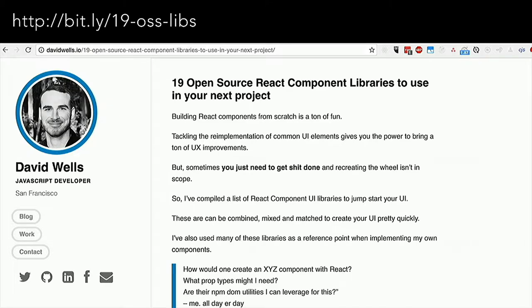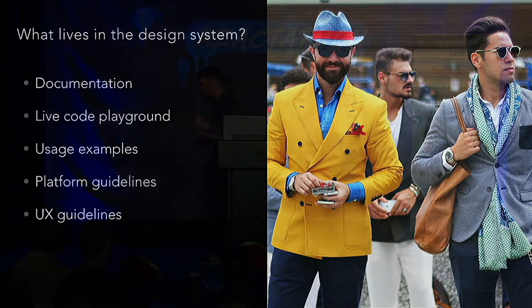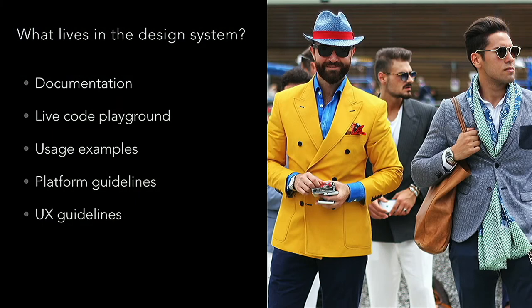I have a blog post on many more React component libraries — there are so many now that it needs to be updated. So what exactly lives in a design system? Documentation where developers can play around with code and components without having to install something locally. Usage examples showing how to actually use something, not just the prop types but with actual click handlers. Platform guidelines — what are the UI paradigms of your application, what do settings screens and modal interactions look like, what are the primary, secondary, and tertiary colors? As well as UX guidelines.